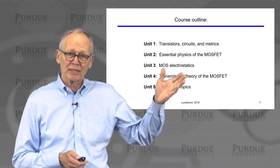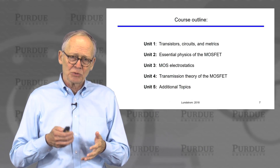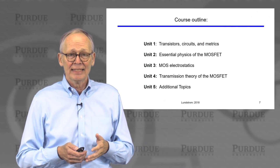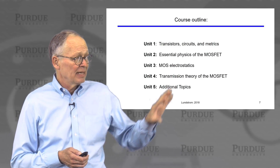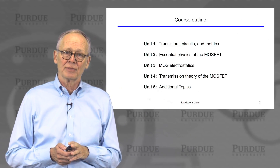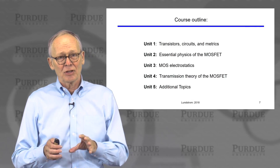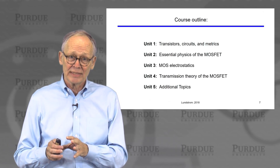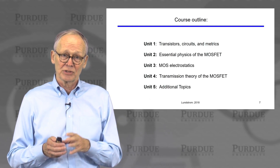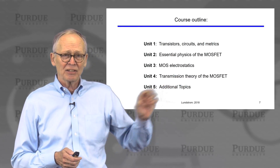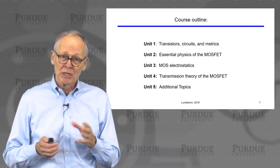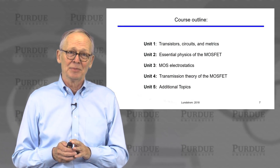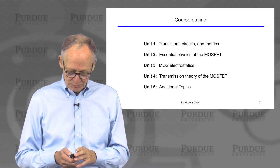Unit three is a traditional topic — MOS electrostatics — about how the voltages applied to the terminals affect the electric fields inside the device and their effect on performance. Unit four brings the new understanding of current flow at the nanoscale to the MOSFET, developing a physically sound but simple understanding of very small devices that can also be applied to traditional long channel devices. Then there are a few additional topics to wrap the course up, including some other kinds of transistors.